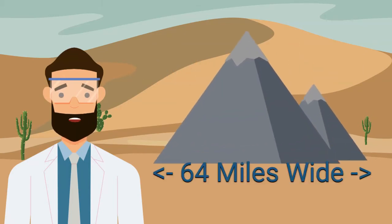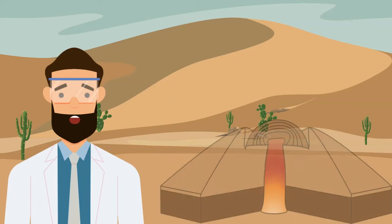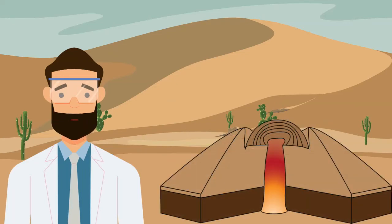Composite volcanoes are cone-shaped with steep slopes, built up by layers of ash and lava. Lava domes are steep-sided mounds made when erupting lava is too thick to flow.